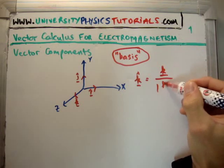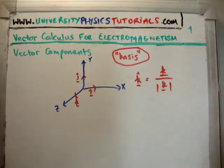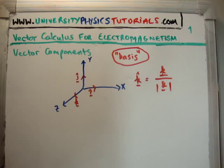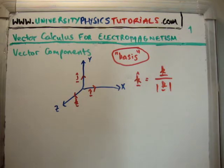The k-hat unit vector is a vector pointing in the z direction of magnitude 1. The i-hat unit vector is a vector of magnitude 1 pointing in the positive x direction. And the j-hat unit vector is a vector of unit length which points in the positive y direction.